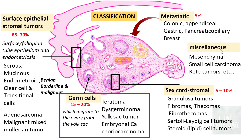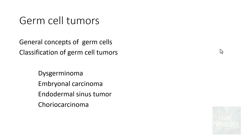In today's session we will be discussing about germ cell tumors — the concepts behind understanding what germ cell tumors are, and then the various germ cell tumors. In the next 15 minutes or so we will look into the general concepts of germ cells and the classification of germ cell tumors, then in detail the pathology and morphological features of Dysgerminoma, Embryonal Carcinoma, Endodermal Sinus Tumor, and Choriocarcinoma.